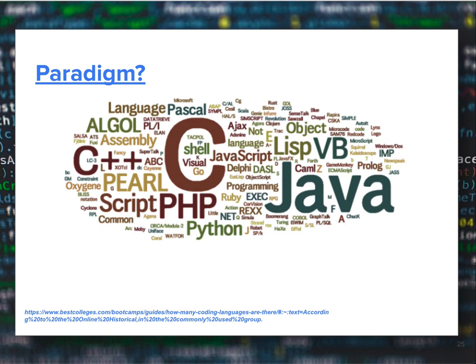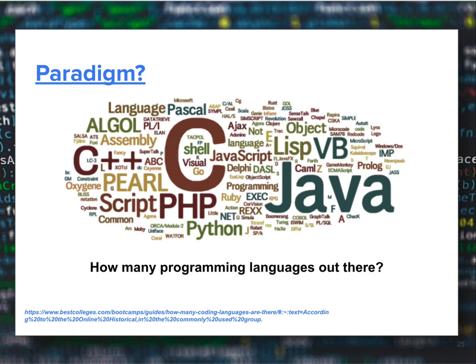This is the same image shown in the previous video from subtopic 1.1 — these are all examples of programming languages that exist. The larger the text, the more commonly that language is used today. You can see C, C++, Java, Perl, Python, and we will be using Java throughout our whole semester.